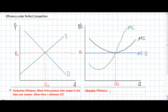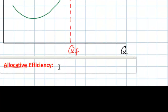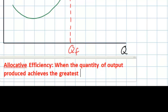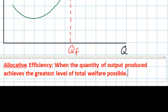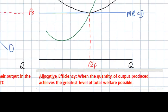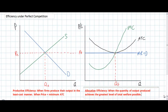Allocative efficiency refers to a situation in which the quantity being produced in the market allows for the greatest level of total welfare — meaning consumer and producer surplus — possible. An industry is allocatively efficient if there is no way that consumer and producer surplus can be increased by changing the level of output.